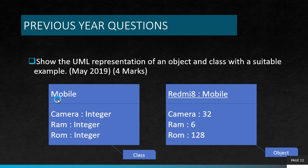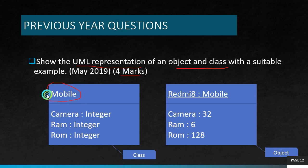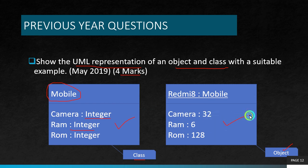Now let's talk about some previous year questions. The question is: show the UML representation of an object and a class. It's pretty simple and it has four marks. So we need to define an object and class representation of a mobile phone. In the class diagram I'm just giving mobile as such because there is no underline and no colon — so this is a class representation. And I'm giving an object name redmi8, colon, the class name. So this is an example of the object and this is how we differentiate the two.